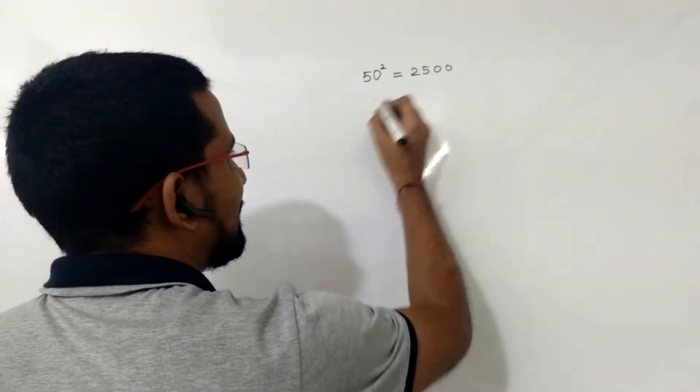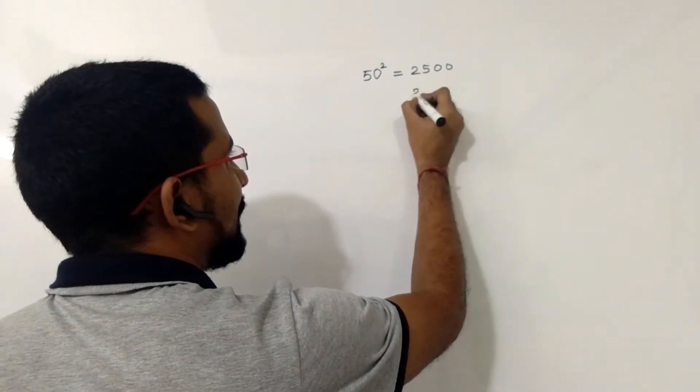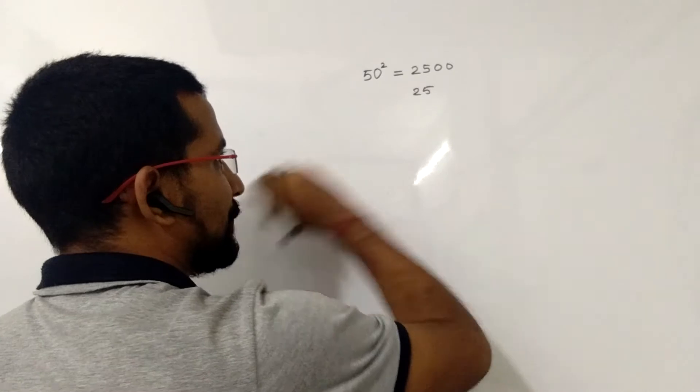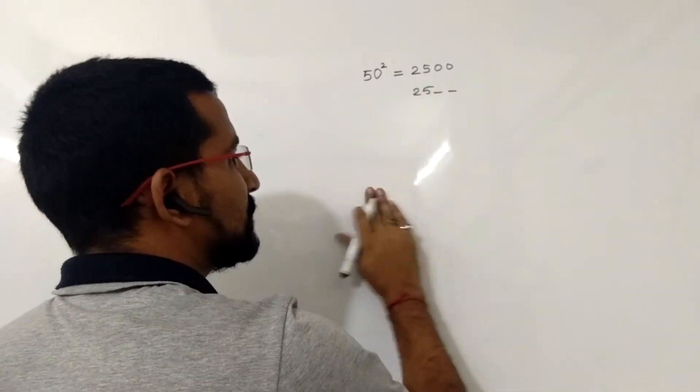I will take the base value as 25, and we will leave two spaces here for the last two digits.